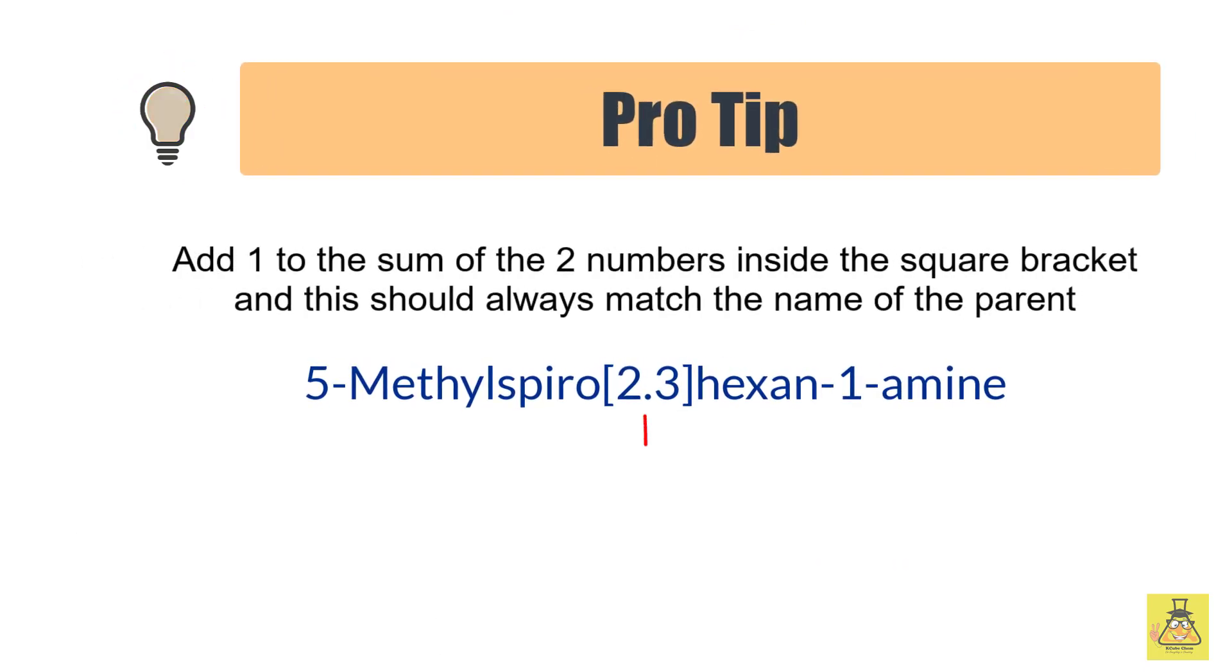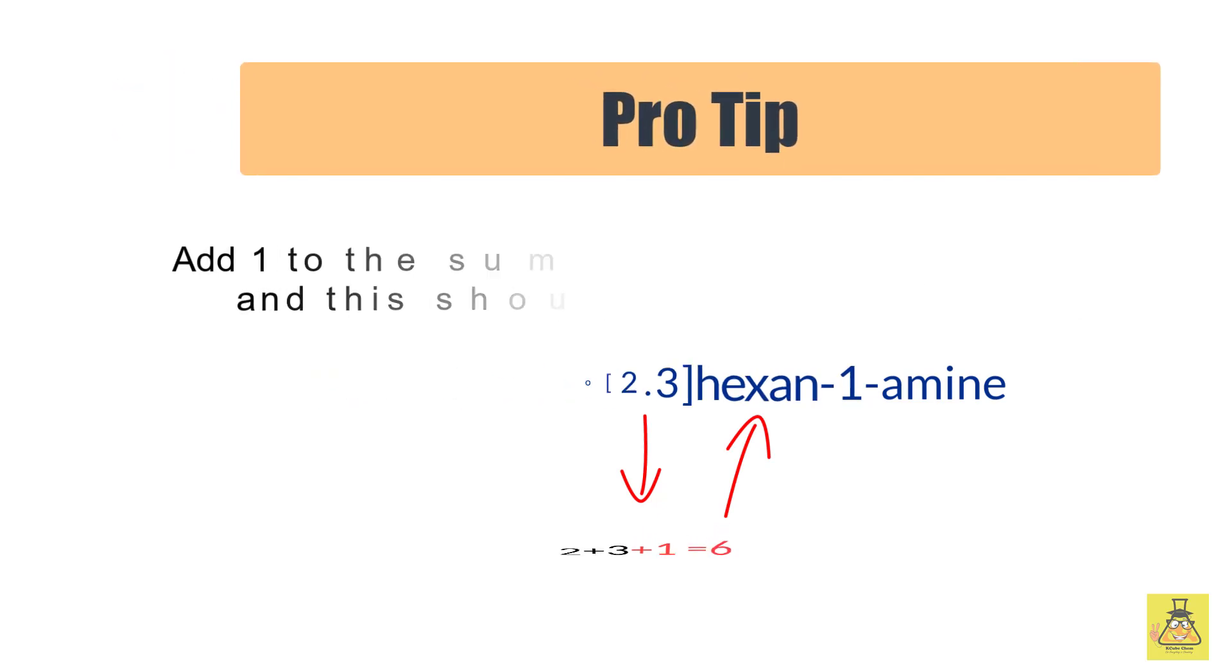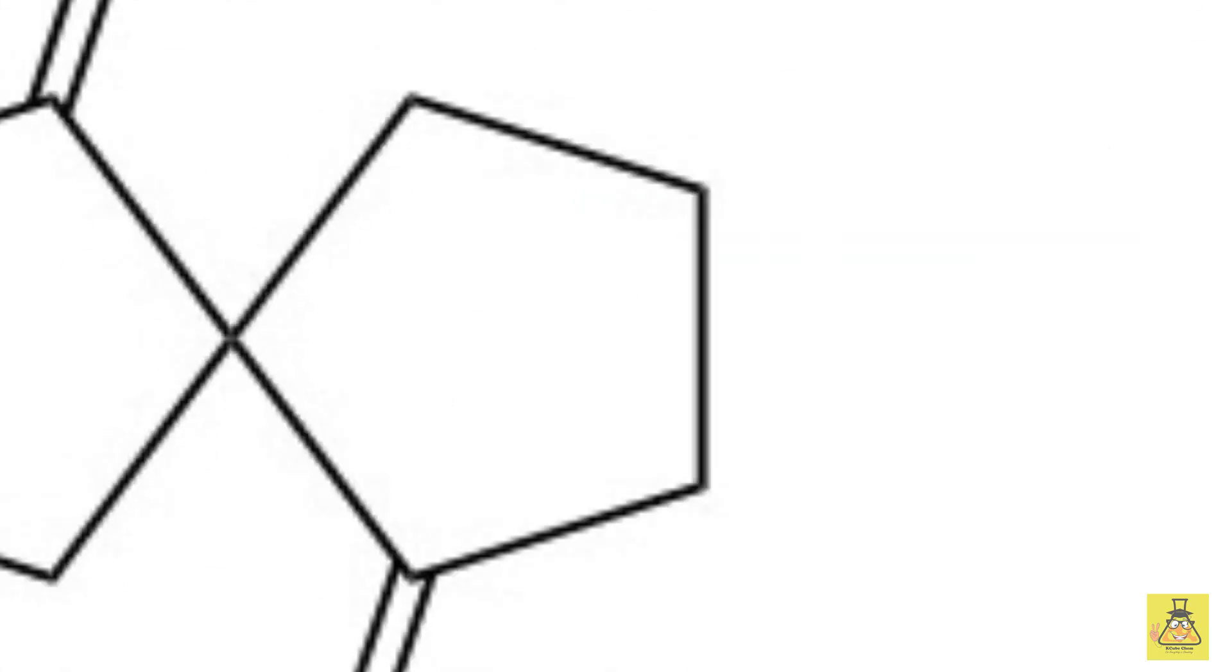Here is a pro tip: add one to the sum of the two numbers inside the square bracket, and this should always match the name of the parent. In our case it does, and it's always advisable to match this. Now let's solve a few more problems.